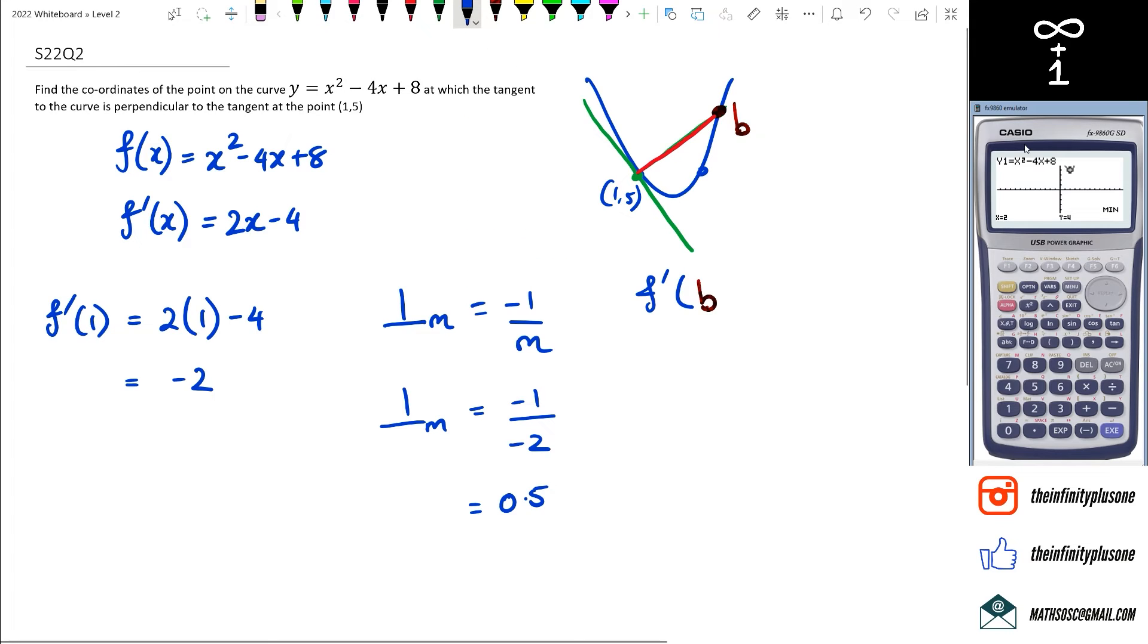So the gradient at point B is equal to 0.5. So we can actually figure out what this is, because we know the gradient function, which is 2x minus 4, equals 0.5, and then 2x is equal to 0.5 plus 4. And if we're going to keep going, we're going to get 2x is equal to 4.5, and then x is equal to 4.5 divided by 2, which actually gives us 2.25.